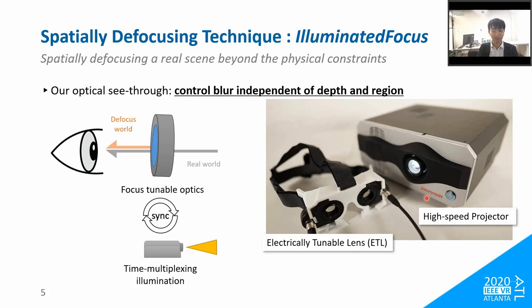In order to add a blurring function to optical see-through AR, we employ an Electrically Tunable Lens, ETL, as a focus-tunable optics system. We also use a high-speed projector as time-multiplexing illumination to determine the blurred region of a real scene. Illuminated focus makes spatially defocusing a real scene beyond the physical constraints by synchronizing these devices.